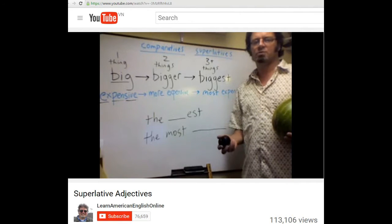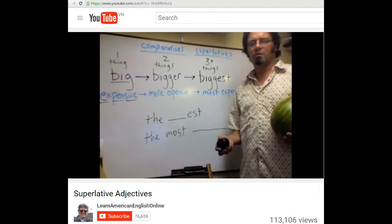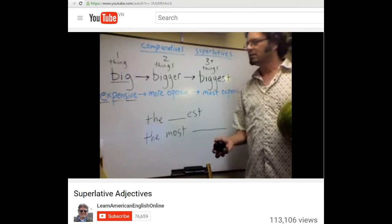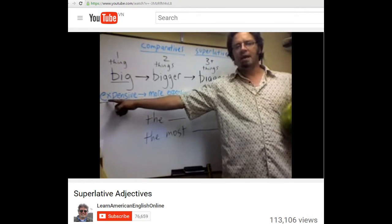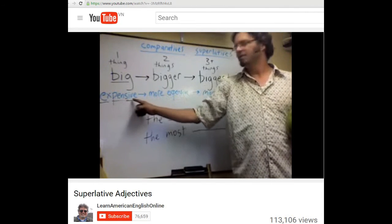Adjectives that are two syllables or longer form the superlative differently. Let's take the adjective expensive. Expensive has three syllables.